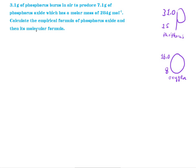So, 3.1 grams of phosphorus burns in the air to produce 7.1 grams of phosphorus oxide which has a molar mass of 284 grams per mole. Calculate the empirical formula of phosphorus oxide and then its molecular formula.